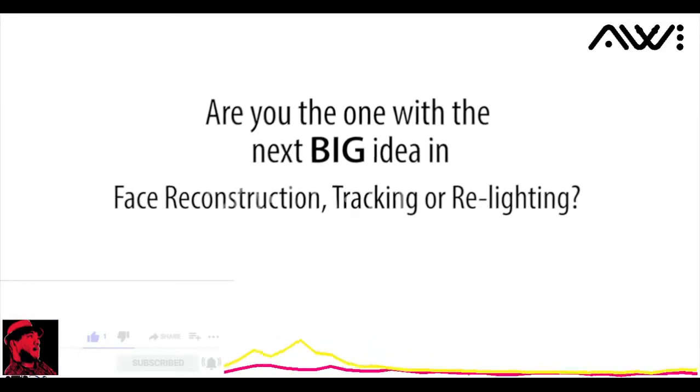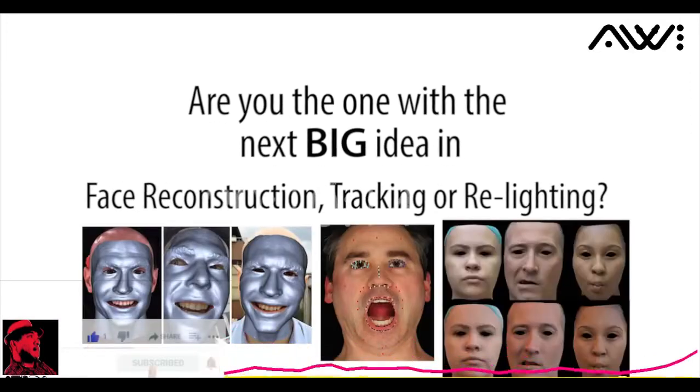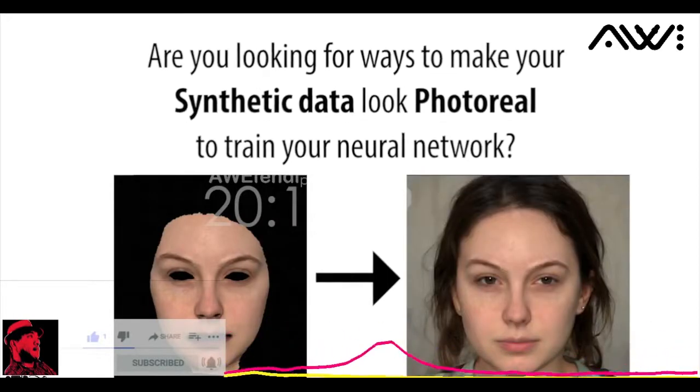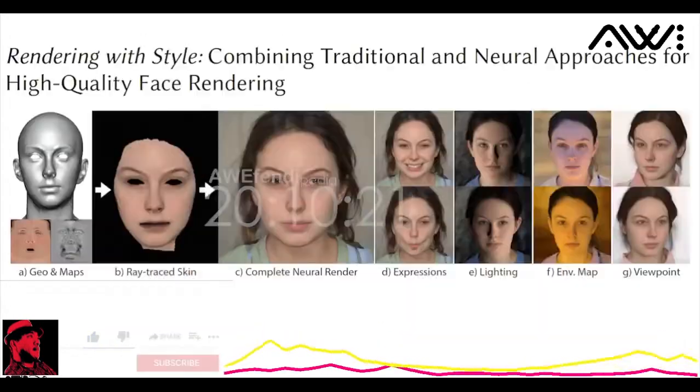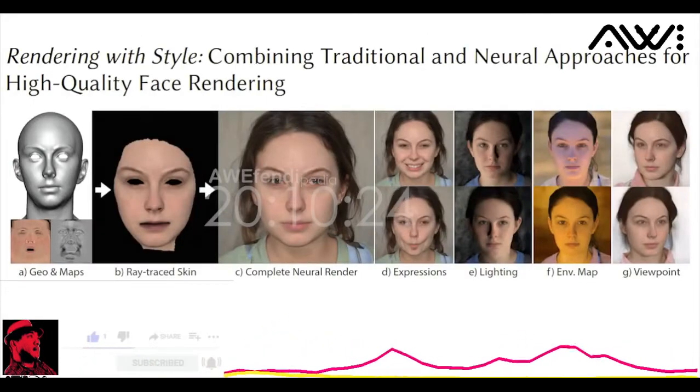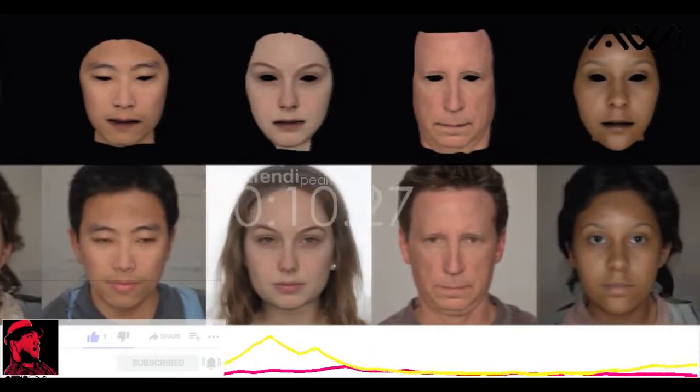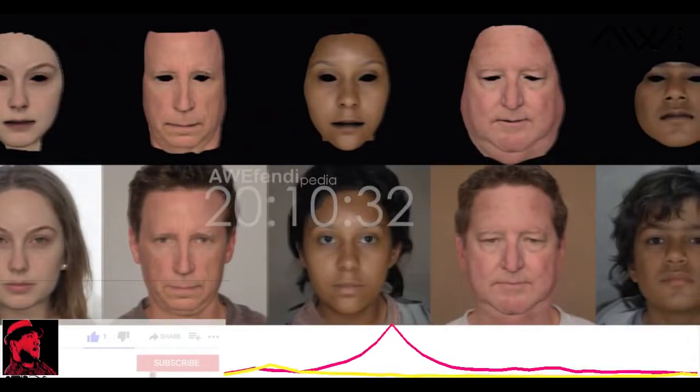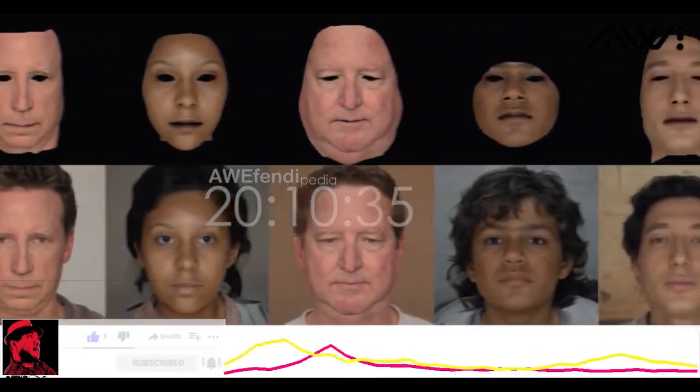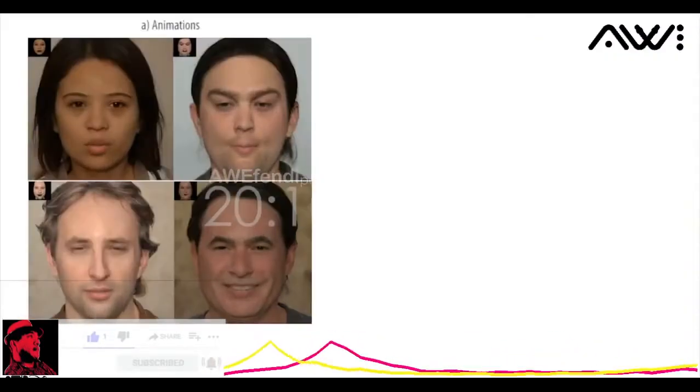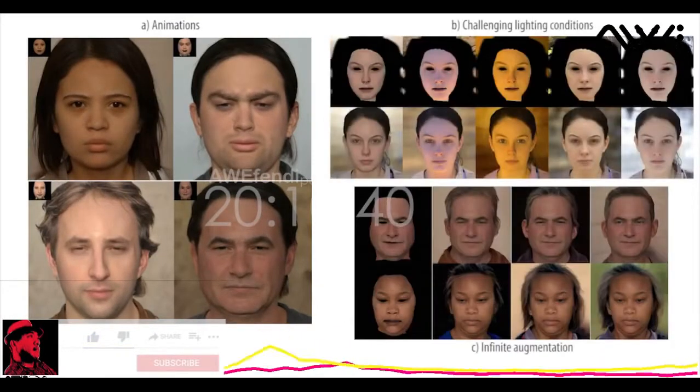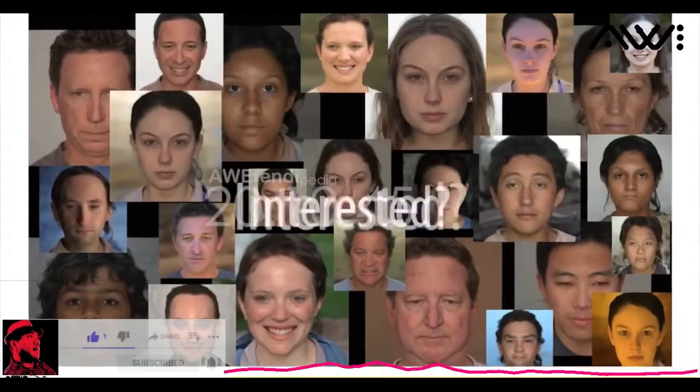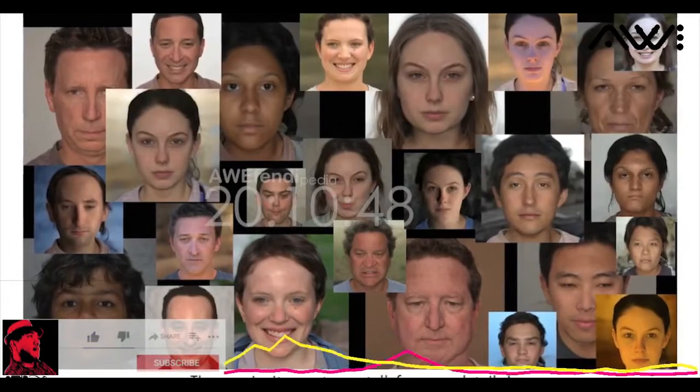Are you the one with the next big idea in face reconstruction, tracking, or relighting? Are you looking for ways to make your synthetic data look photoreal to train your neural network? Then our new work, Rendering with Style, may be just what you're looking for. We present a hybrid rendering technique that combines traditional rendering with a pre-trained generative model to consistently lift partial renders of a face to photoreal full head portraits complete with hair and eyes. Our technique can process simple animations, challenging lighting conditions, and even lets you generate an infinite variety of realistic examples for the same subject. Interested? Then we invite you to our talk for more details.